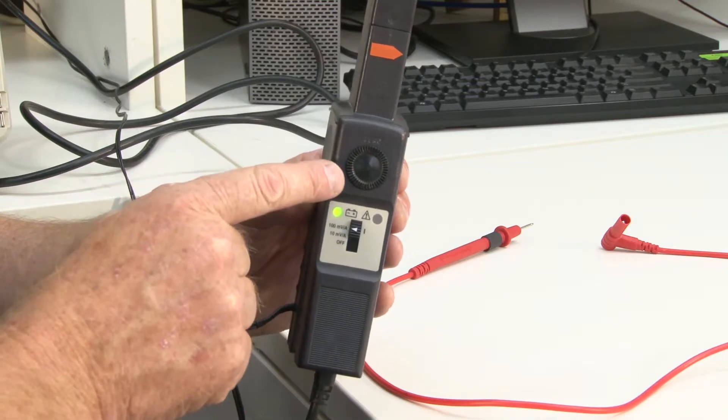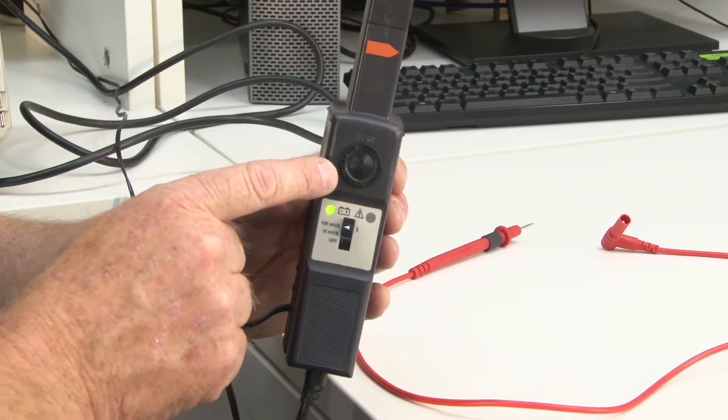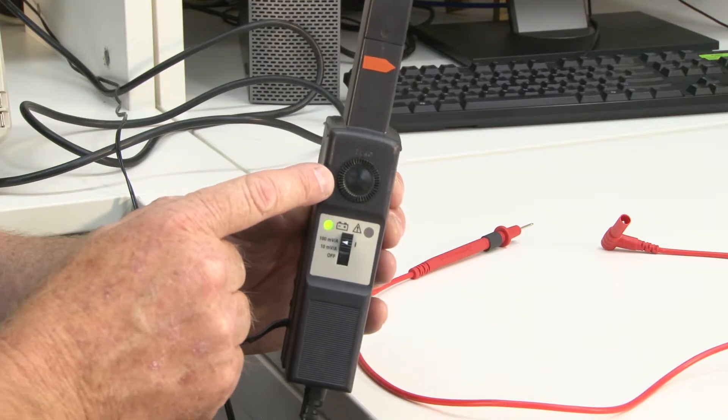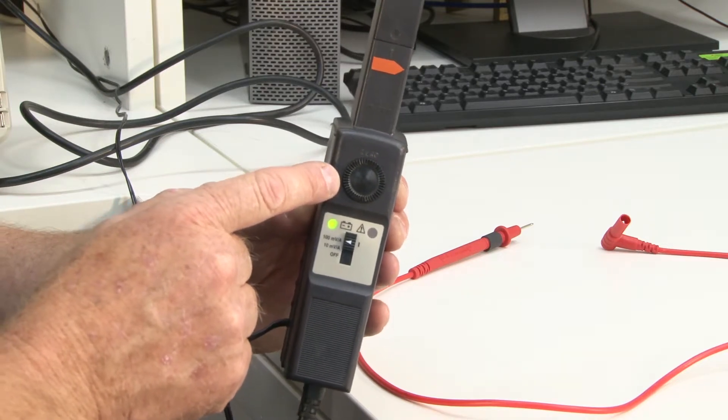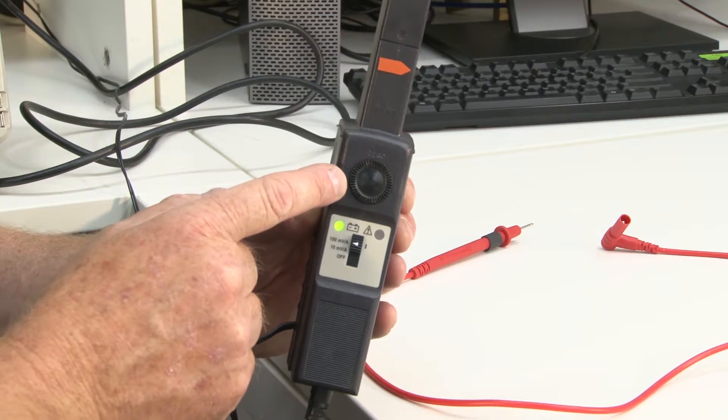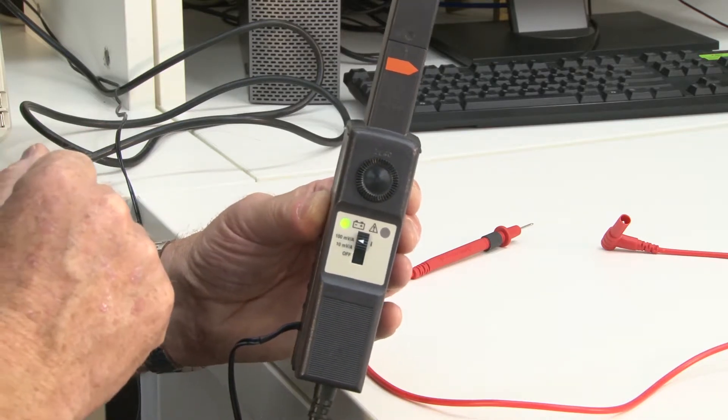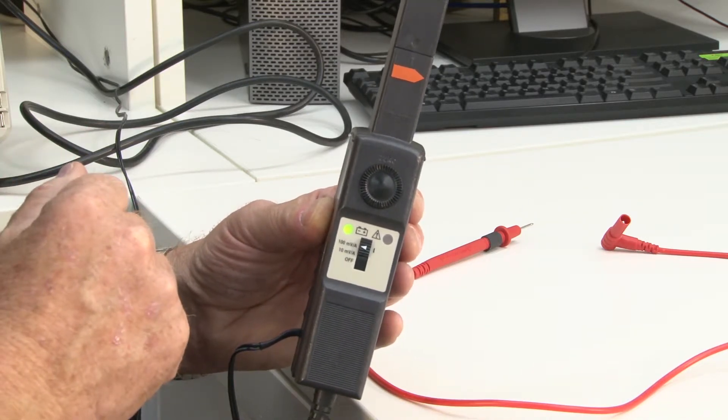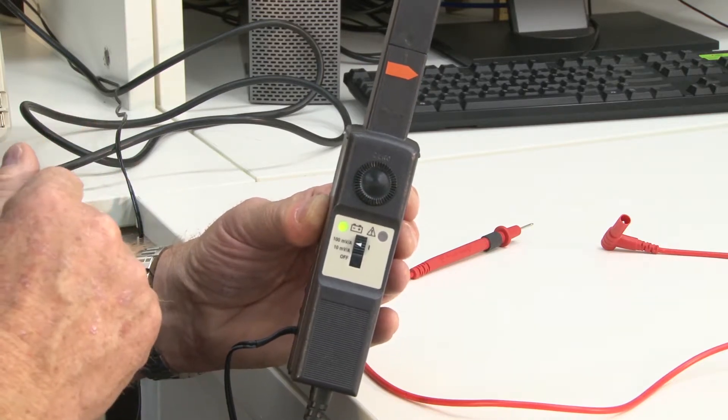Now above here you'll notice there is a little wheel. This wheel is really used to calibrate the probe such that when we attach the probe into our circuit, we need to make sure that we are registering a zero for zero current on the oscilloscope.